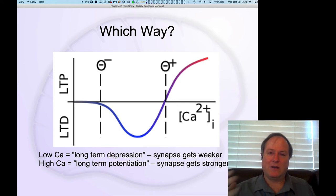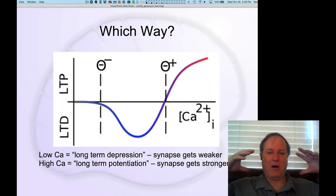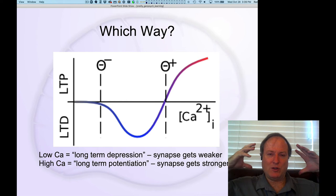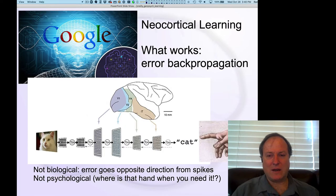This gives us a very well-validated understanding of the details of how learning works at the synapse. But there's another level here: how does the overall network itself learn? How do we get our neurons to do the right thing? That's a larger-scale question about the overall shape of learning across networks of neurons — the main question for neocortical learning.